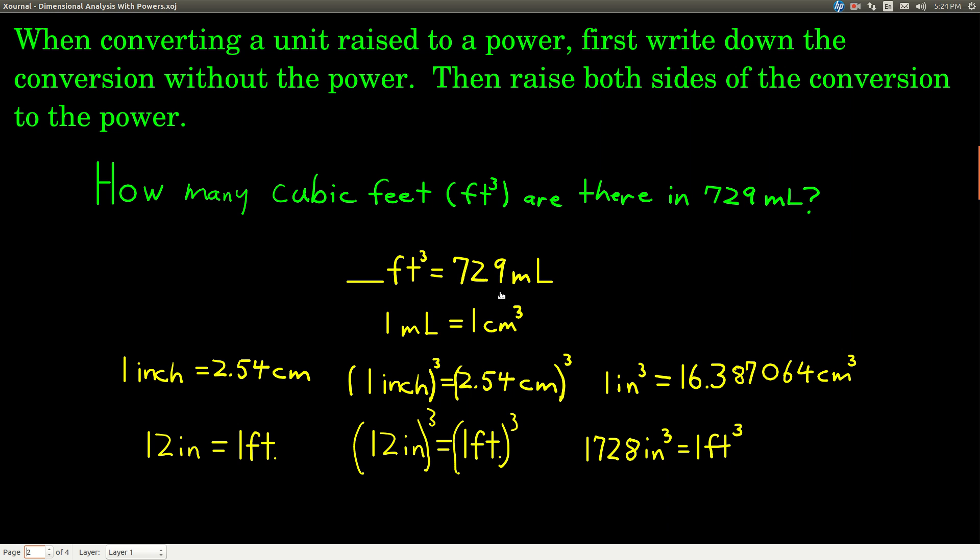Now we're going to write down conversion factors. Whenever you have a conversion that involves volumes, milliliters is a unit of volume, and cubic feet, anything cubed, any length cubed, is a unit of volume also. Anytime you have something like this where one side is cubed and the other side isn't, almost always you're going to use this conversion factor that I asked you to memorize: 1 mL = 1 cm³. You see what that does is it gets us from milliliters to centimeters cubed. Once we go there, now we can do what I was just talking about.